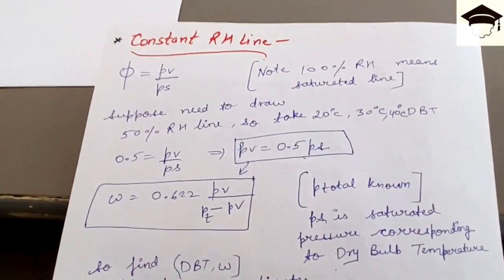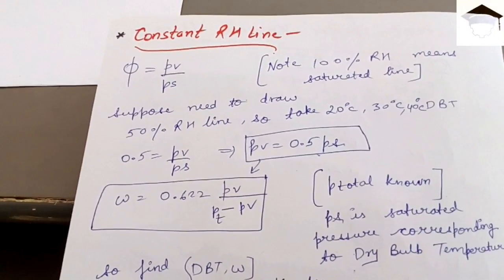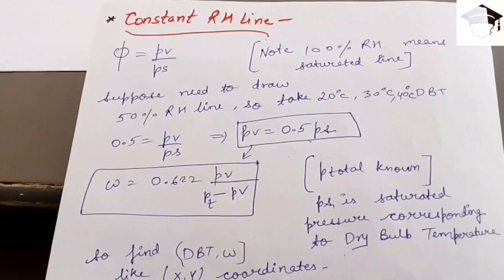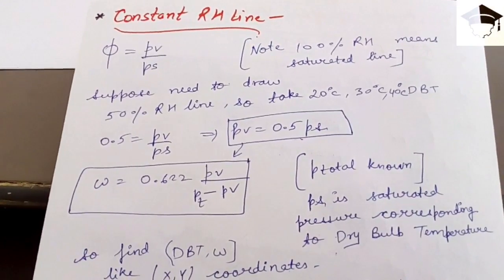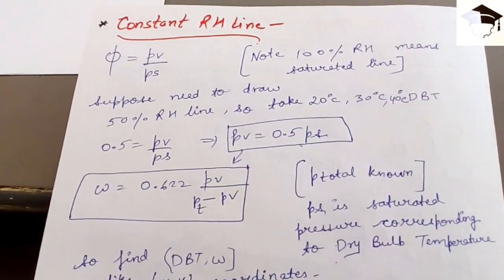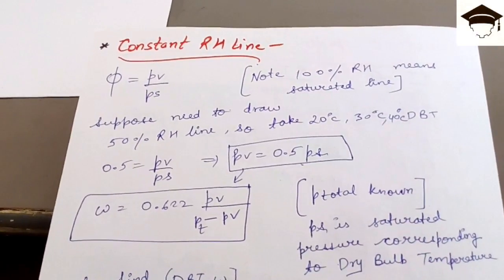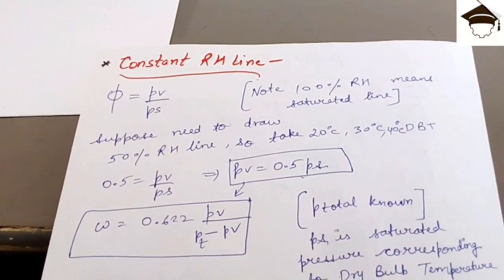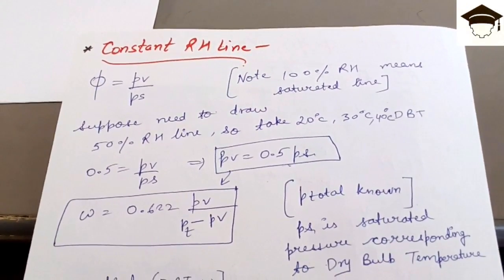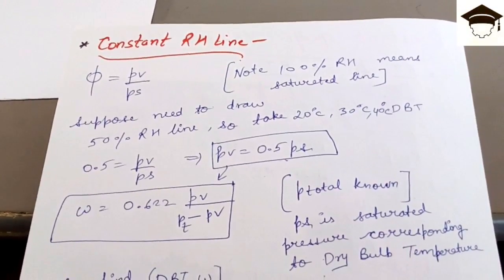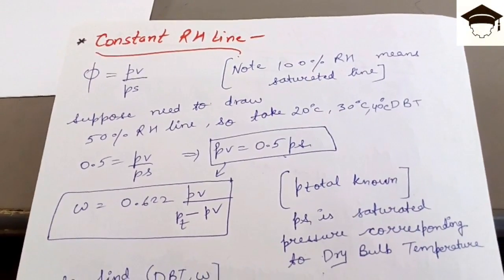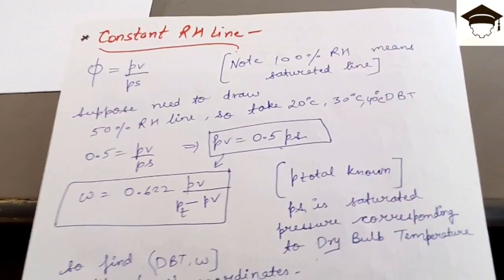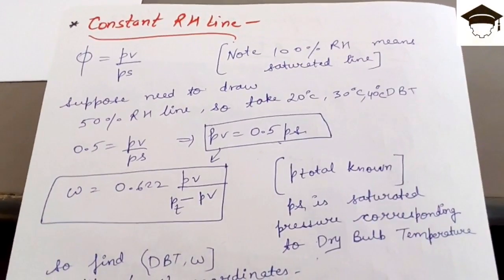In the next video, I have covered how to draw the constant enthalpy lines. Click the first link in the description to be directed to that video. I have made separate videos for each construction of the psychrometric chart — constant enthalpy lines, constant wet bulb temperature line, saturation line, and constant specific volume line — to keep each video clear and concise.